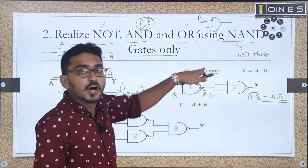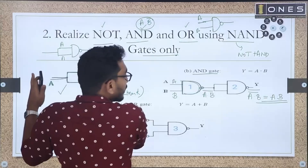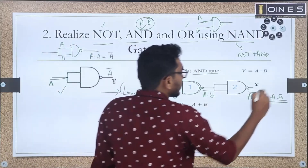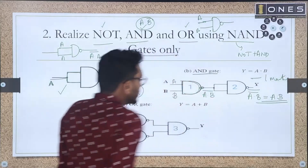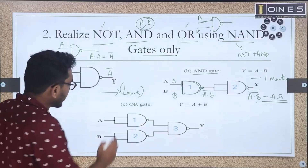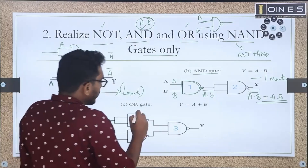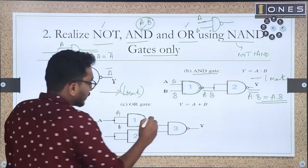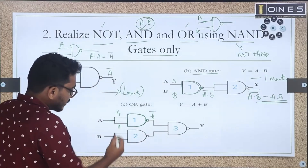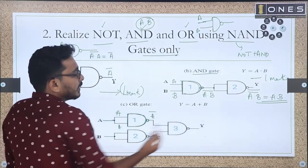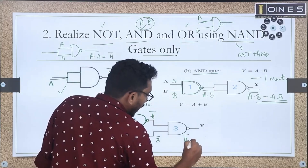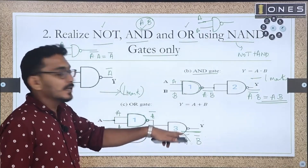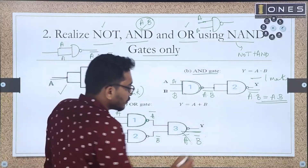To realize an OR gate using NAND gates: first complement A using a NAND (A NAND A = A-bar), and complement B using another NAND (B NAND B = B-bar). Then feed A-bar and B-bar into a third NAND gate, giving (A-bar · B-bar)-bar. By De Morgan's theorem, this equals A + B — the OR gate.